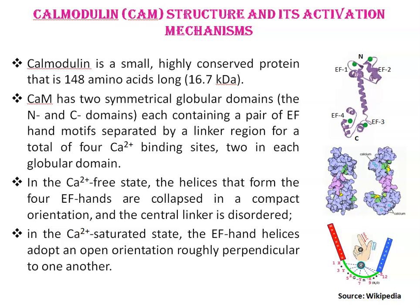Next is calmodulin structure and its activation mechanisms. Calmodulin is a small, highly conserved protein that is 148 amino acids long. It has two symmetrical globular domains — the N-domain and C-domain — each containing a pair of EF-hand motifs: EF-1 and EF-2 in the N-domain, and EF-3 and EF-4 in the C-domain. These pairs are separated by a linker region, for a total of four calcium binding sites — two in each globular domain. The green dot-like structures in the diagram represent calcium ions.